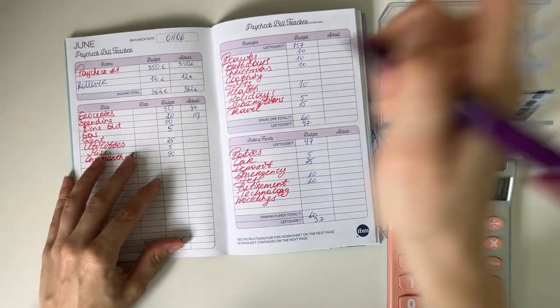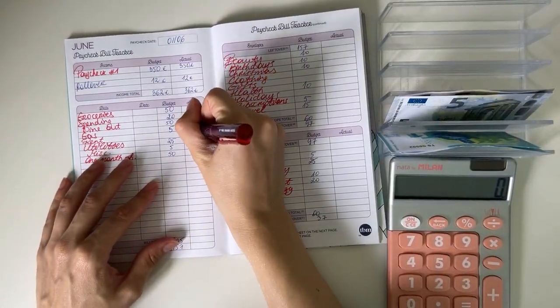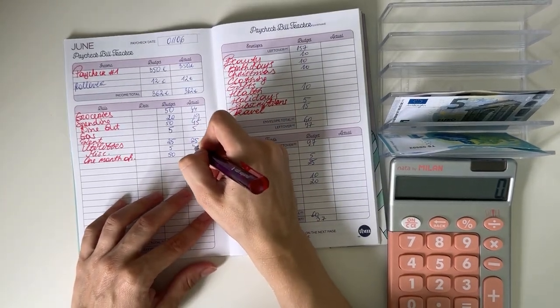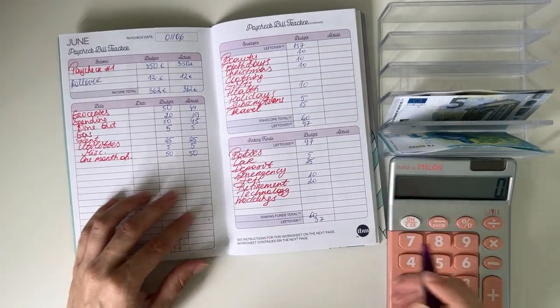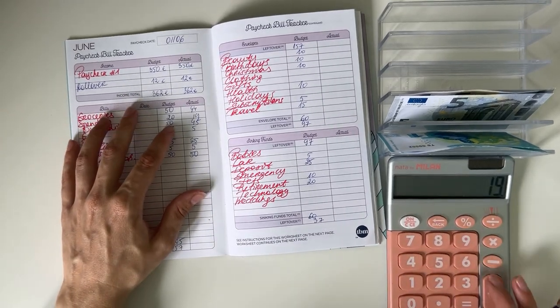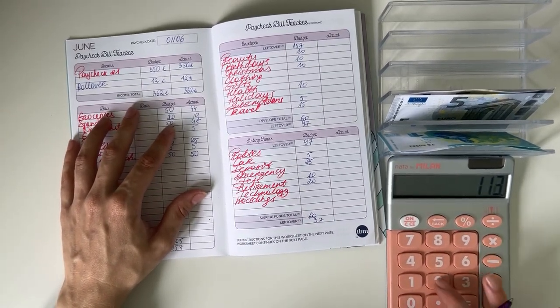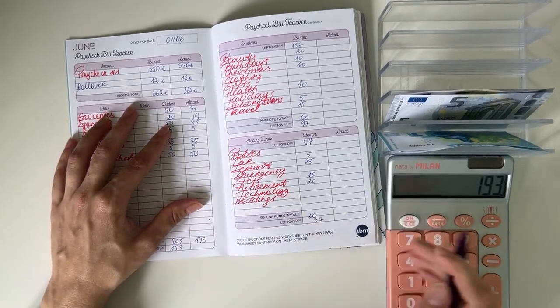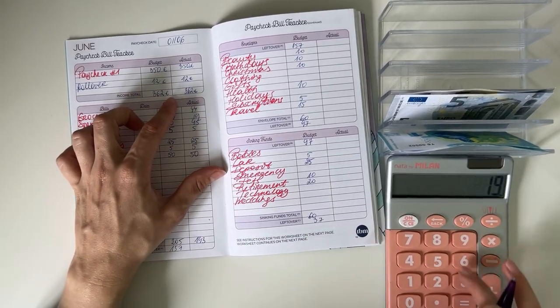Gas got 5—oh my god my nails are dirty, I'm sorry for that. Utilities got 25, miscellaneous 5, and one month ahead 50. So in total for cash envelopes and bills that was 193, so 362 minus 193 is 169.